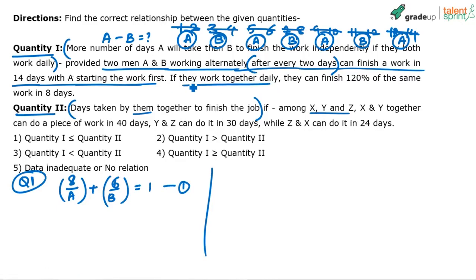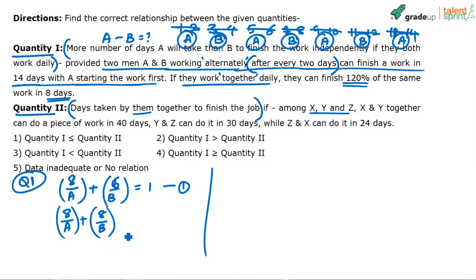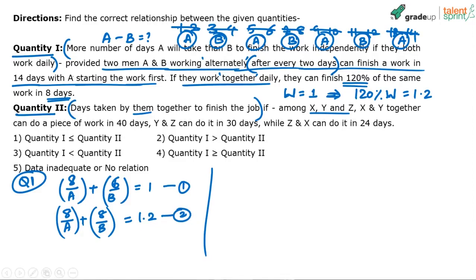Second equation: if they work together daily, they finish 120 percent of the same work in eight days. A does 8/a of the work and B does 8/b. Since total work is one unit, 120 percent equals 1.2, so: 8/a + 8/b = 1.2. Now solve these two equations to get A and B, then find A minus B for quantity one.